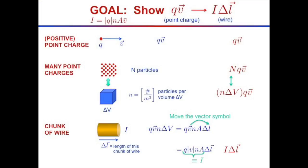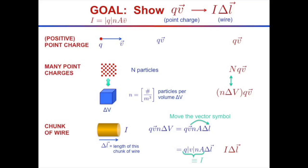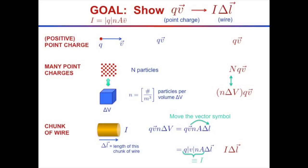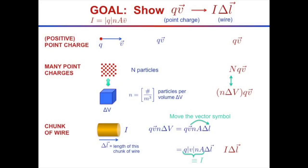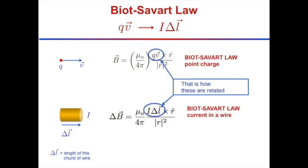Now I have Q, V, A, and n together — which is exactly the conventional current I equals Q times n times A times V. So Q times n times A times V equals I, meaning QV becomes I delta-L. This shows how you go from the single point charge formulation to the current-in-a-wire formulation.